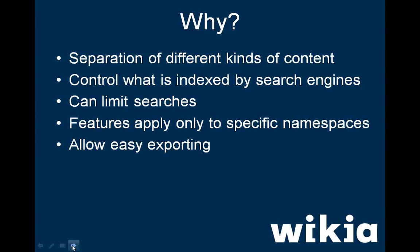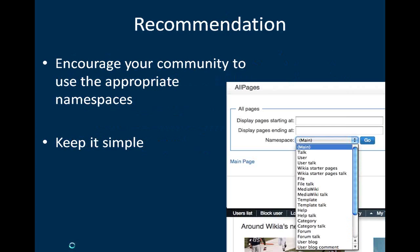Custom namespaces can be created if the standard ones do not meet the needs of your Wikia project. Only staff can create custom namespaces, so you can request them by sending a message at special contact. We recommend working within the default namespaces and encouraging your community to use the appropriate namespace for different types of pages. Remember, the creation of a new namespace essentially creates a new section of the Wiki — the more sections, the more complex the structure will be.